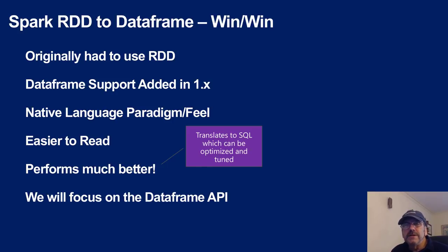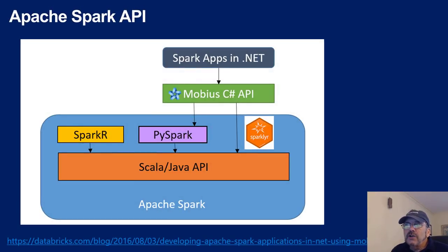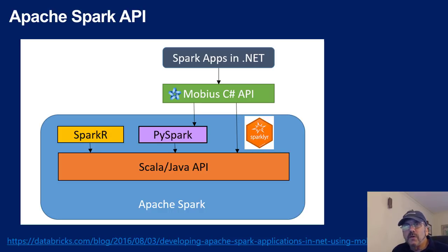The takeaway is I'm going to focus on the DataFrame API and very little on the RDD approach, because it doesn't generally perform as well and isn't as intuitive. Looking at the overall architecture: you have the Spark engine, above that the Scala/Java API. When you want to use R or Python, you use a library that translates your calls into the API. SparklyR is also available, particularly focused on the Tidyverse-type capabilities.